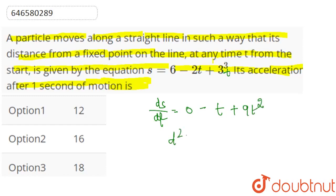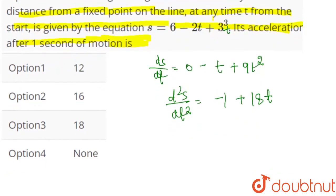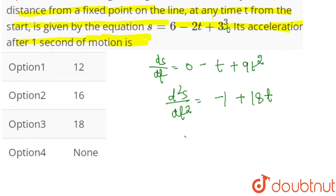Then d²s/dt² = -1 + 18t. At t = 1, d²s/dt² = 17. If there's no matching option, we choose option 4.